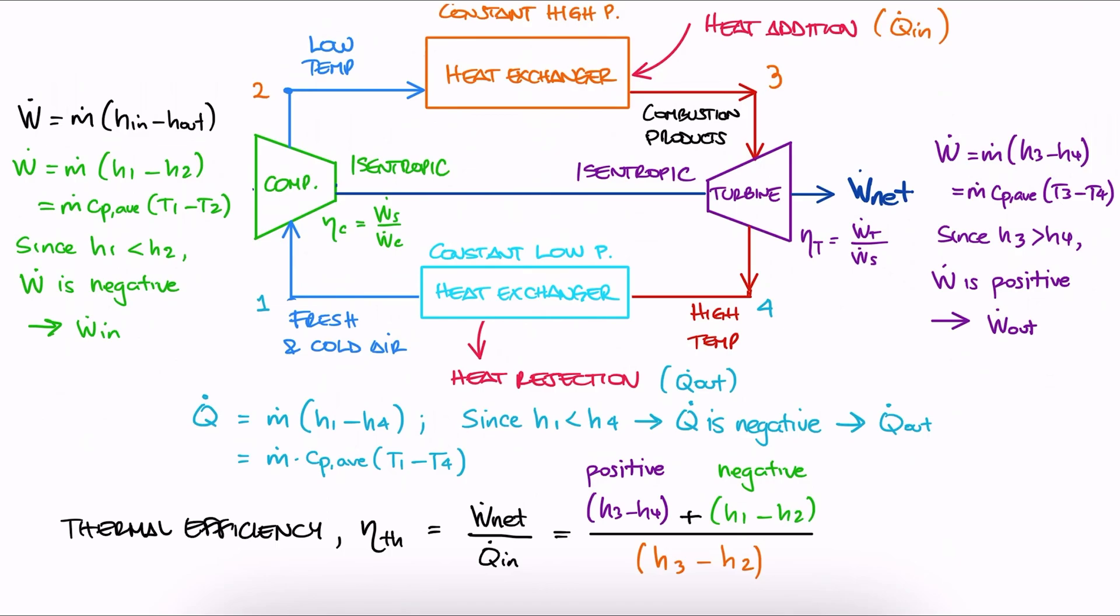Depending on how you number label the stages, the subscripts will change. I'm just showing you the general mathematical procedure to get an expression for efficiency based on specific enthalpy values or even specific heats and temperatures.